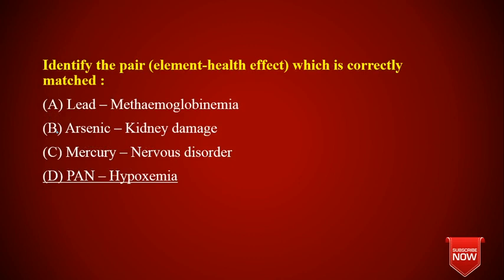Identify the correctly matched pair of element and health effect. Lead causes anemia. Nitrates in overdose cause methemoglobinemia. Arsenic leads to cardiovascular disease, not kidney damage. Mercury causes Minamata disease, always. PAN causes hypoxemia. So the correctly matched answer is PAN and hypoxemia.